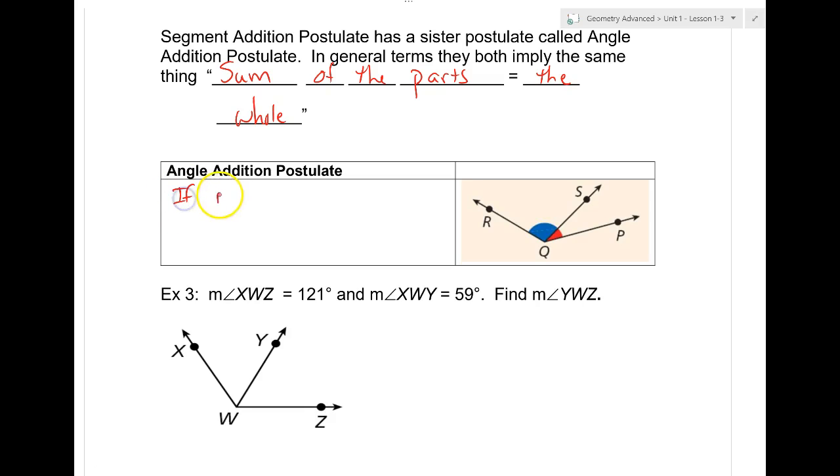If point S is in the interior of angle RQP, then we know the measure of angle RQS plus the measure of angle SQP equals the measure of angle RQP. So basically we're saying these two smaller ones add up to the big one, which makes sense, right? Nothing really different than before. Guess what's going to be the key with these? Mark up your diagrams. Redraw, it doesn't take that long, and mark up your diagrams.